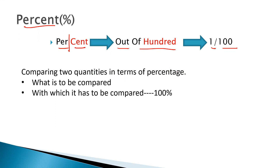When we compare two quantities, there are two important aspects to look into. One, we need to know what is to be compared. The other is with which it has to be compared, which is considered to be 100 percent. If we apply the proven technique called chain rule, we get things done more easily.